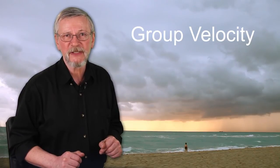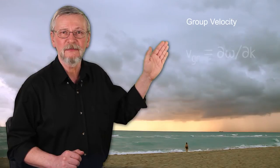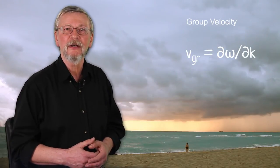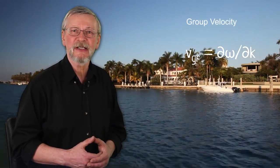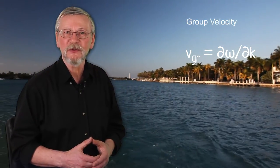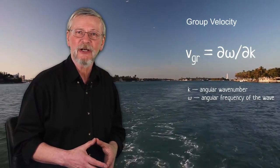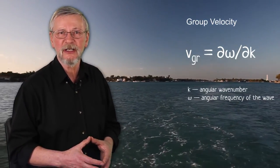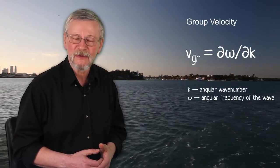Group velocity is measured for waves and describes the combined shape of the wave's amplitudes. It can be calculated using the following formula. Here, k represents the angular wave number — the spatial frequency of the wave, usually measured in radians per meter. The angular frequency of the wave, a scalar measure of the rate of rotation, is denoted by omega and is generally measured in radians per second.